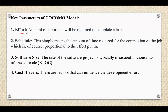Effort is the output of the model, calculated by considering both the size of the software and effort adjustment factors. It indicates how many person-months are needed to complete the project. The second parameter is schedule — the estimated time to complete the project, often measured in months. The model estimates the project schedule based on the effort and the productivity factor. The third parameter is software size, usually measured in lines of code, where thousands of lines of code is represented as KLOC.